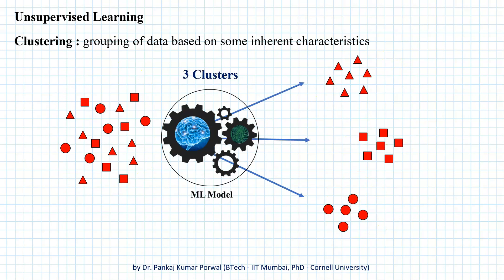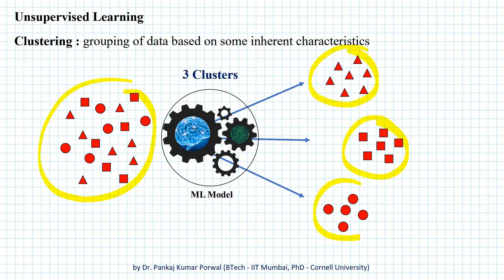Similarly, if we want to form three clusters from our data set, one possible way could be triangles in one cluster, squares in another cluster, and circles in a third cluster. Our model will have to learn the parameters accordingly.